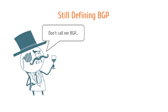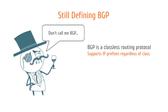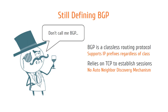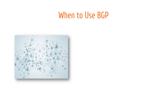BGP is a classless routing protocol. It supports IP prefixes regardless of class definition defined by IPv4 class A, B, C, D, and E networks. It completely relies on Transport Control Protocol, or TCP, to establish the sessions. BGP doesn't have auto-neighbor discovery, so you will need to statically assign the neighbors running BGP. Currently, the internet uses BGP version 4 in general as Exterior Gateway Protocol, or EGP, as defined under RFC 4271.